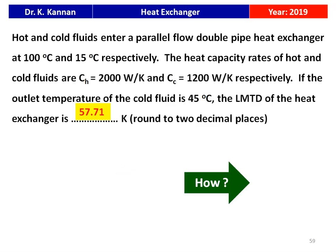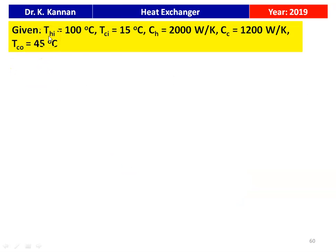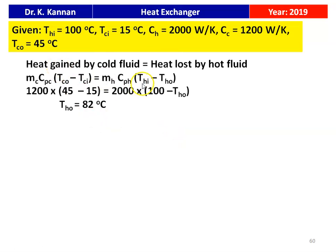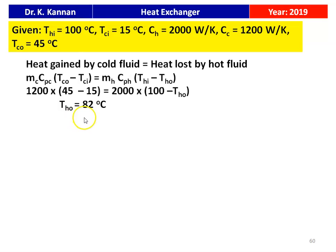We will show the calculation in the next slide. We are given THI = 100°C, TCI = 15°C, heat capacity of the hot fluid CH = 2000 W/K, cold fluid CC = 1200 W/K, and TCO = 45°C. Heat gain by the cold fluid equals heat loss by the hot fluid: CC × (TCO − TCI) = CH × (THI − THO). Substituting: 1200 × (45 − 15) = 2000 × (100 − THO). Solving, the hot fluid outlet temperature THO = 82°C.